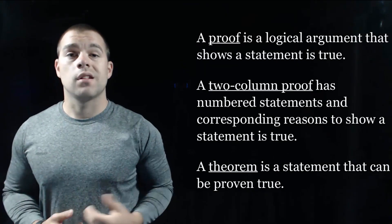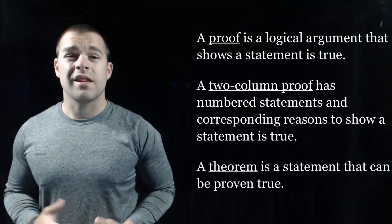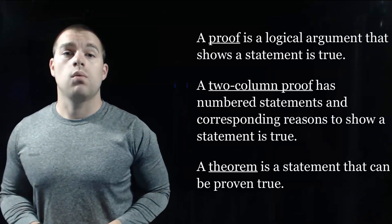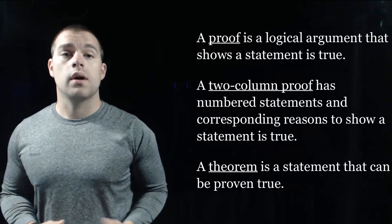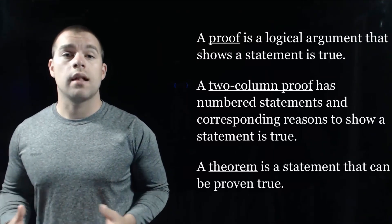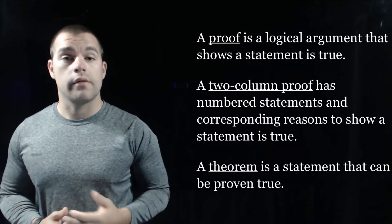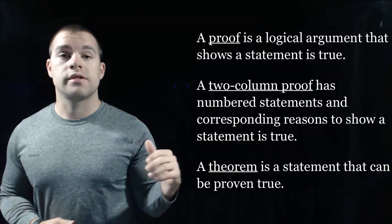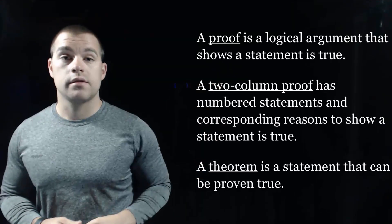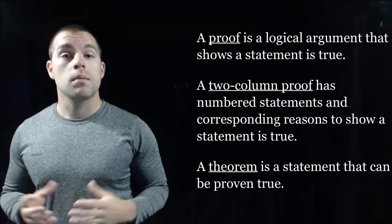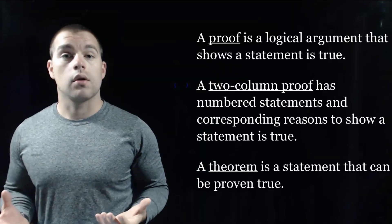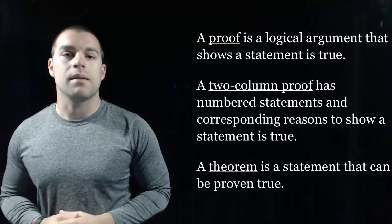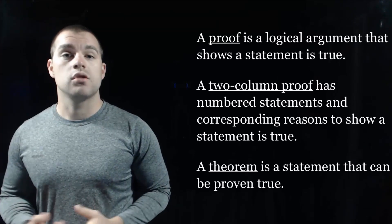A proof is a logical argument that shows that a statement is true, and we're going to be using two-column proofs, a lot like we did with solving equations, where we've got numbered statements and corresponding reasons, and we're going to be proving things called theorems. A theorem is just a statement that can be proven true.